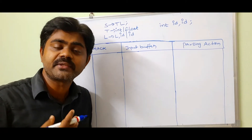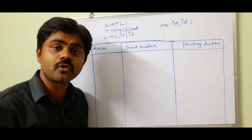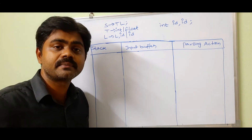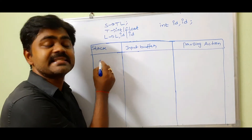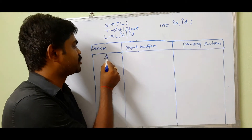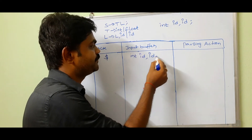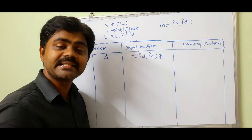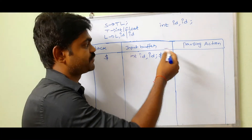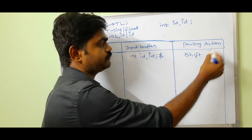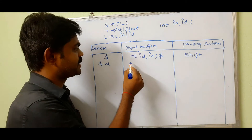For the second example, the grammar is: S → t L semicolon, t → int | float, L → L comma id | id. We need to parse the string: int id, id, id semicolon. The stack starts with dollar, and the input buffer is: int id comma id comma id semicolon $. The first parsing action is shift, so we shift int: stack becomes $ int, input buffer is id comma id semicolon $.